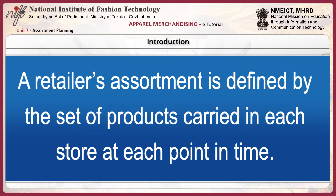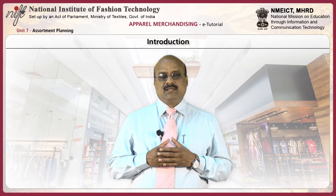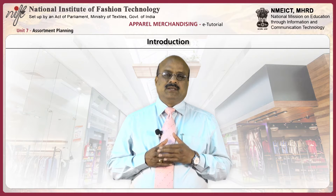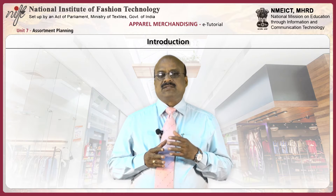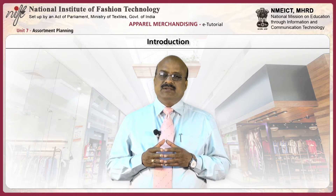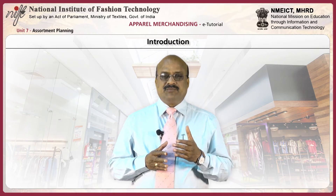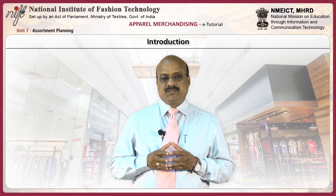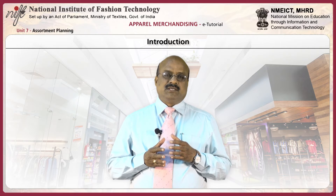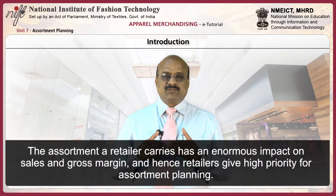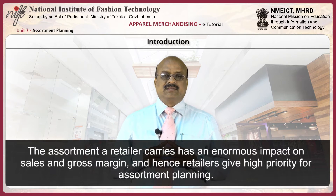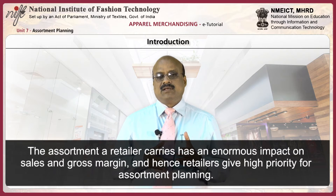A retailer's assortment is defined by the set of products carried in each store at each point in time. The goal of assortment planning is to specify an assortment that maximizes sales or gross margin, subject to various constraints such as a limited budget for purchase of products, limited shelf space for display of products, and miscellaneous constraints such as a desire to have at least two vendors for each type of product.